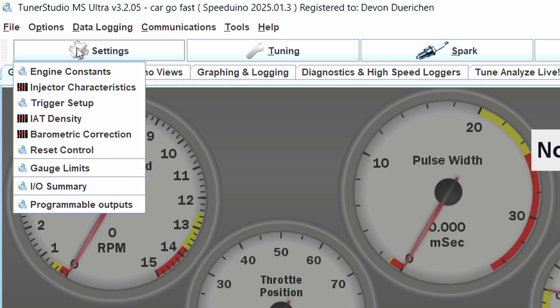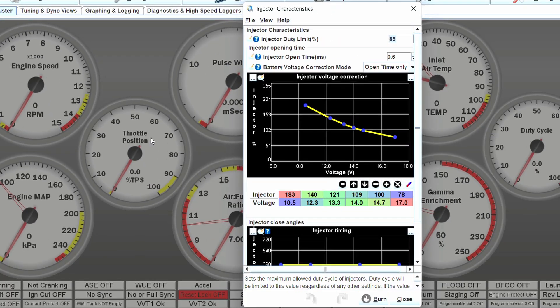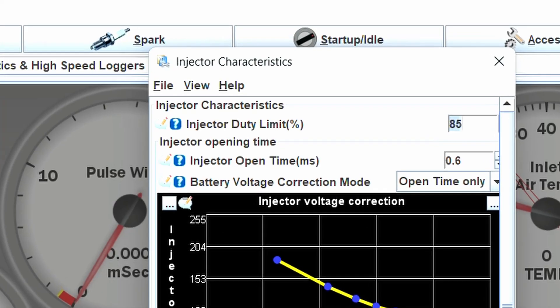let's go over the Tuner Studio settings we are currently concerned with. Firstly, in the injector characteristics tab, you will find the settings for the injector dead time. You can see that Speeduino calls this injector open time here, and then we have a value in milliseconds, which is a baseline of sorts.